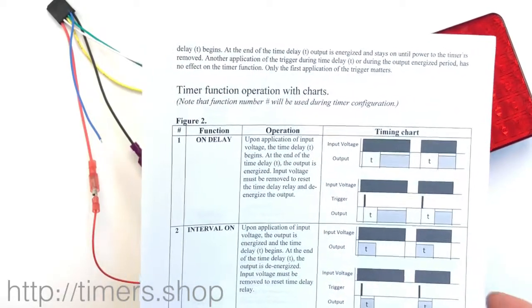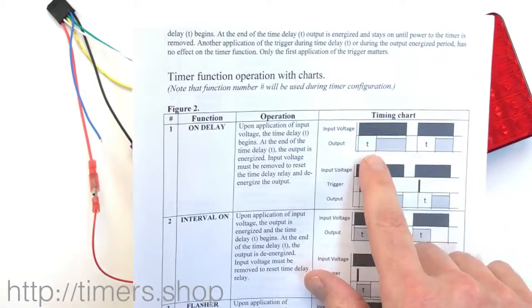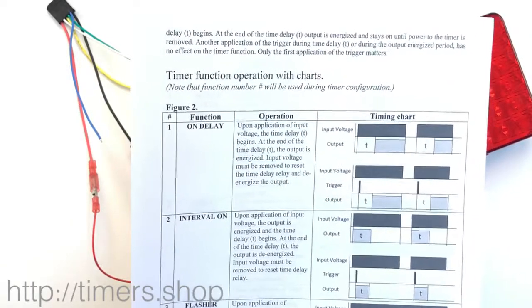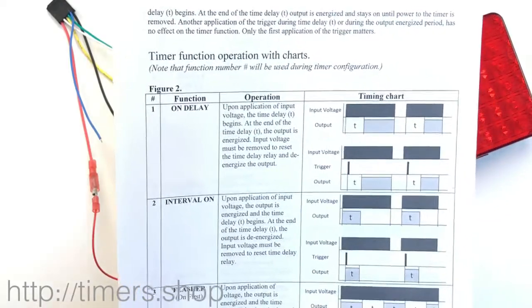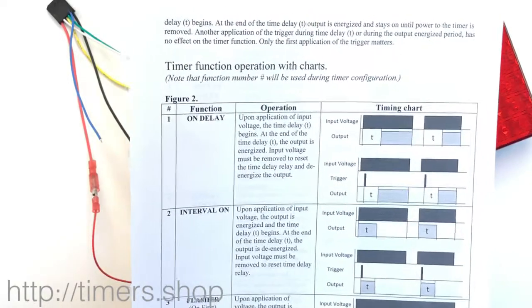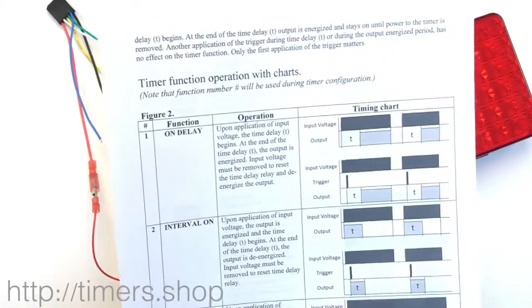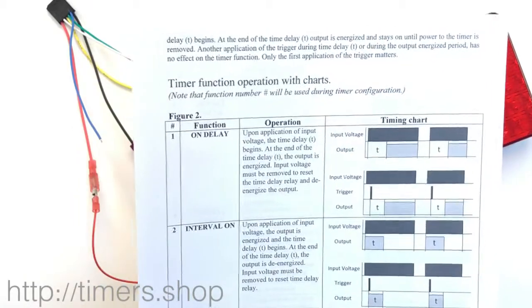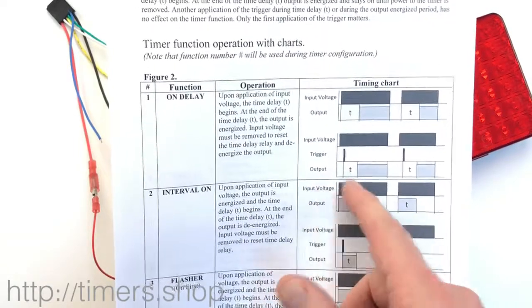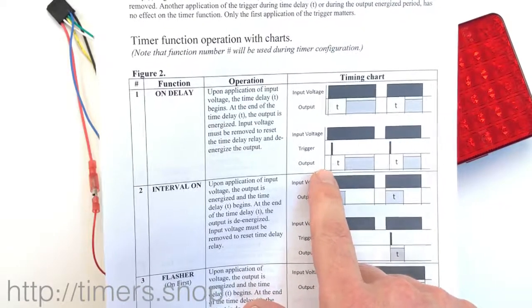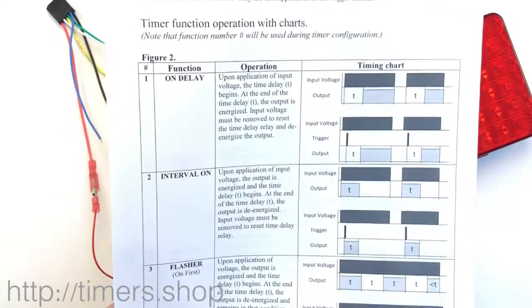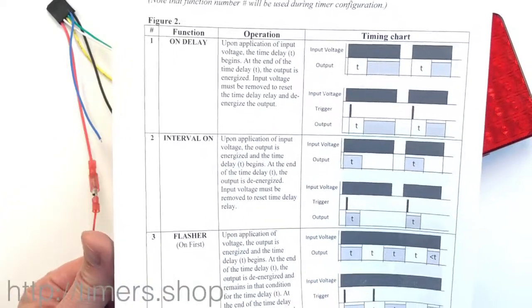If we configure the timer to function number one without the trigger, as soon as we supply the power, the output comes on and stays on for a period of time, then it shuts off until you recycle the power. But if you want to supply power to the timer without the output coming on instantly — you want to wait until an outside signal, maybe a switch or ignition signal, tells the timer to start the countdown — you would configure the timer to use the trigger. When you supply power, nothing happens. When the trigger comes on, it starts the timing, supplies the output, then shuts off, and then you recycle the power.